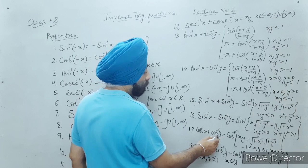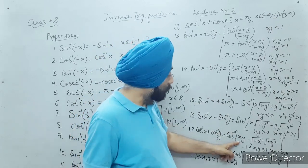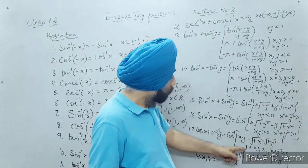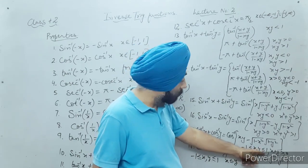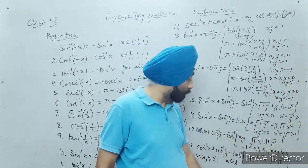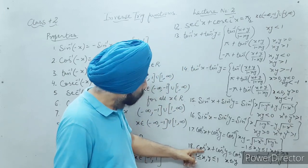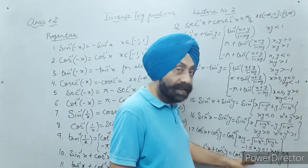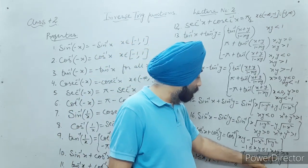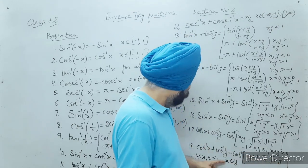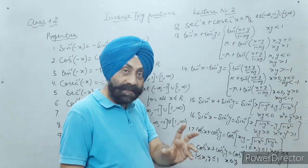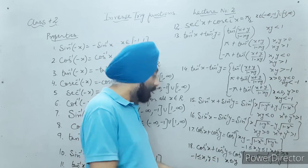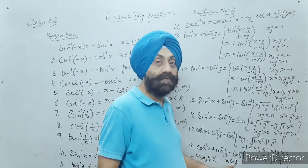Cos inverse x plus cos inverse y equals cos inverse of [xy minus root(1 minus x²) times root(1 minus y²)], where minus one is less than or equal to x, y less than or equal to one, or x plus y is greater than or equal to zero. The other case: cos inverse x plus cos inverse y equals cos inverse of [xy plus root(1 minus x²) times root(1 minus y²)], where x, y lies between minus one and one and x is less than or equal to y.